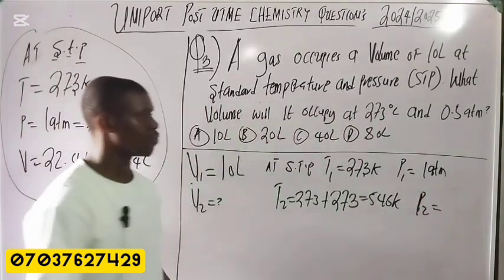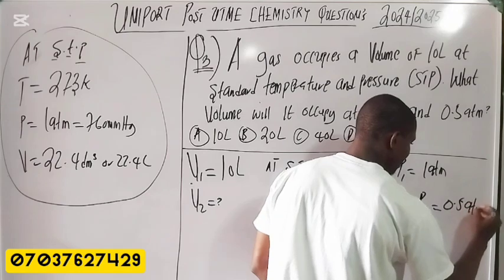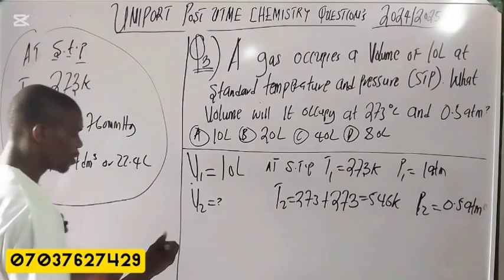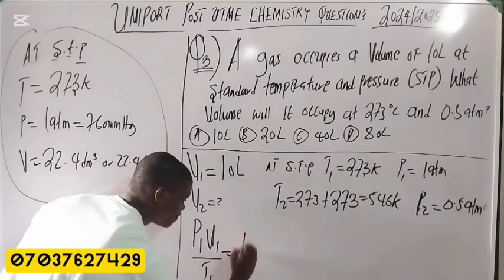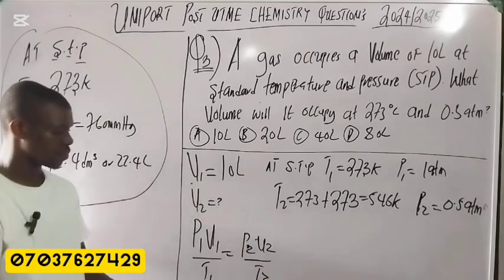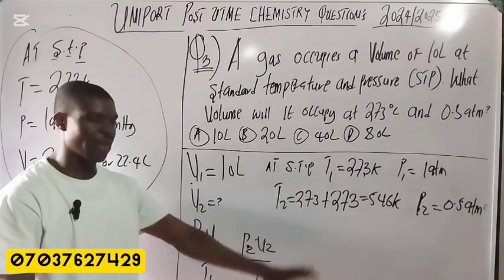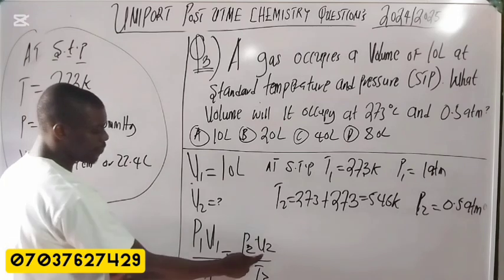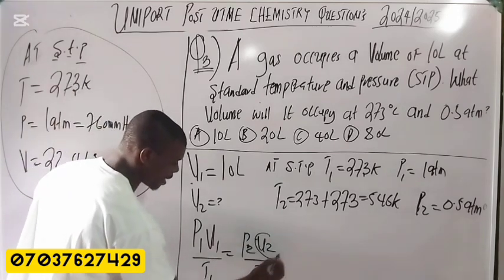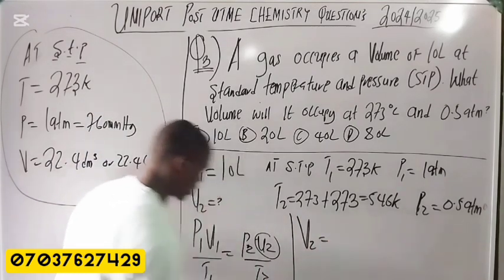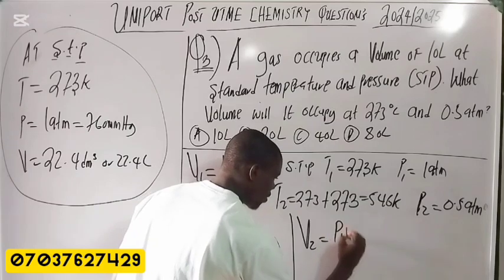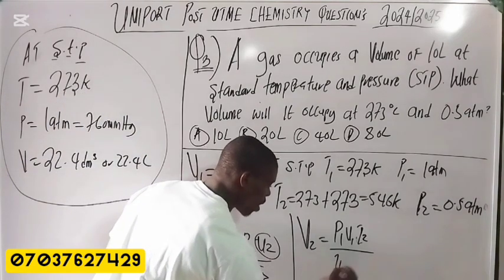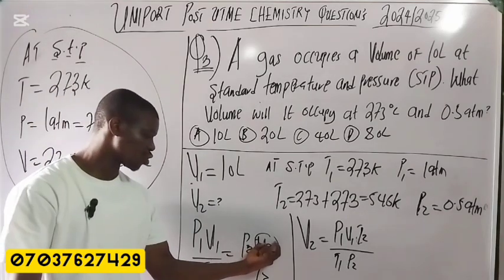My final pressure P2 = 0.5 atm. Now I'll use the combined gas equation: P1V1/T1 = P2V2/T2. This equation covers pressure, volume, and temperature together. Making V2 the subject of the formula: V2 = P1V1T2 / (T1 × P2).